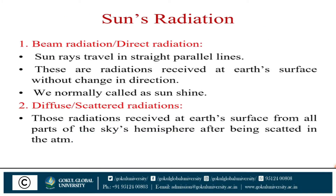Some definitions of solar radiation. First definition: beam radiation, also called direct radiation. Sun rays travel in straight parallel lines. These are radiations received at the Earth without changing direction — we normally call this sunshine. Second definition: diffuse radiation.